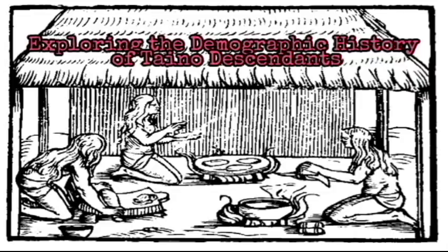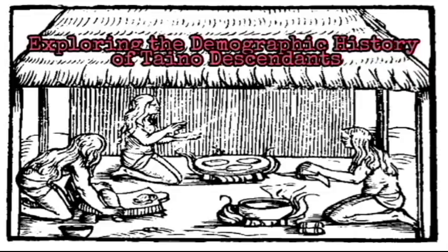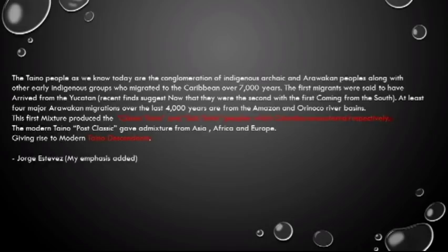Taino people as we know today are the conglomeration of indigenous archaic and Arawak peoples, along with other early indigenous groups who migrated to the Caribbean over seven thousand years. The first migrants were said to have arrived from the Yucatan, though recent finds suggest they were the second wave, with the first coming from the south. At least four major Arawak migrations over the last four thousand years are from the Amazon. The first mixture produced the classic Taino and sub-Taino, which Columbus encountered. The modern Taino, or post-classic, gained admixture from Asia, Africa, and Europe, giving rise to modern Taino descendants.